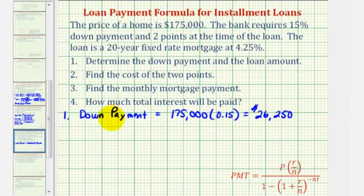So now to determine the loan amount, we'll take the $175,000 and subtract the down payment, which comes out to $148,750.